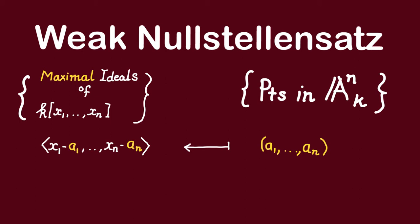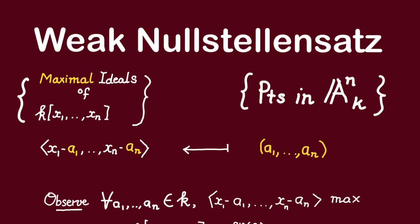That is, let us just focus on the question of how should we think of points in affine space algebraically. Now observe that to every point in affine space, we can associate the ideal of functions vanishing on it. We claim that the ideal of all functions vanishing on this point must be of this form, and that this ideal here is the maximal ideal of the polynomial ring.